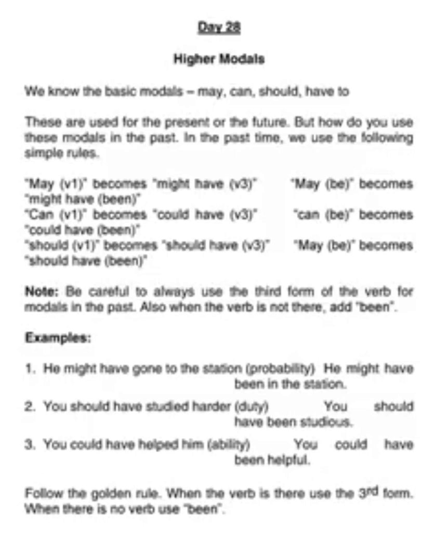Should V1 becomes should have V3. Should be becomes should have been. Note: be careful to always use the third form of the verb for modals in the past. Also, when the verb is not there, add been.